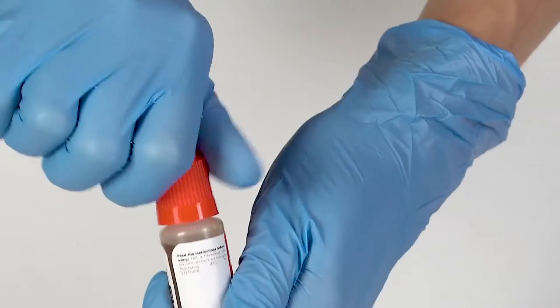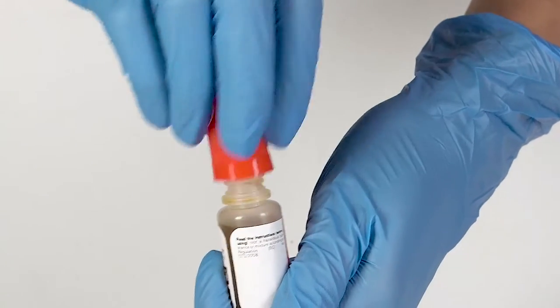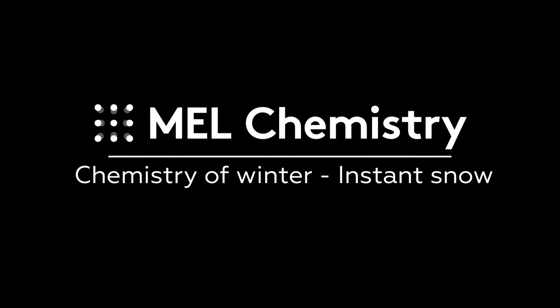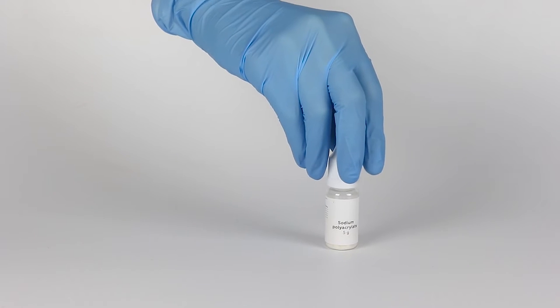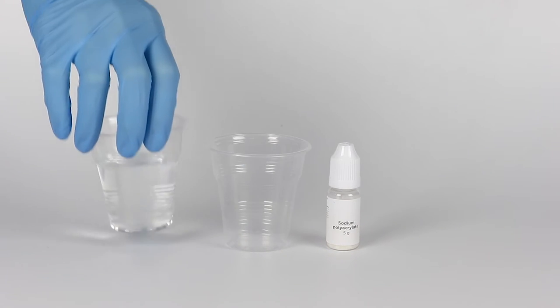To open a bottle containing a reagent, push the cap down and turn it. For the instant snow experiment, you will need sodium polyacrylate, two disposable cups, and some water.